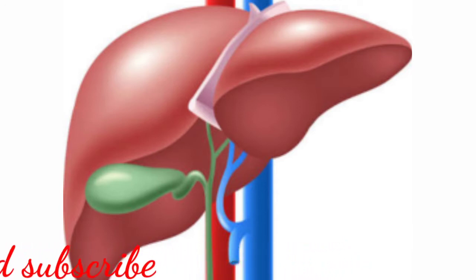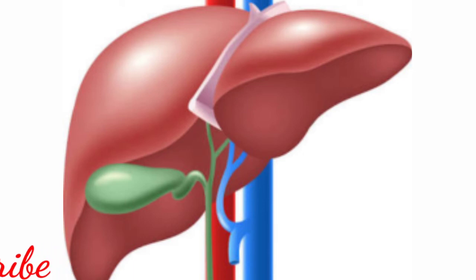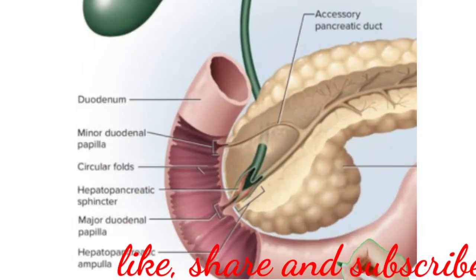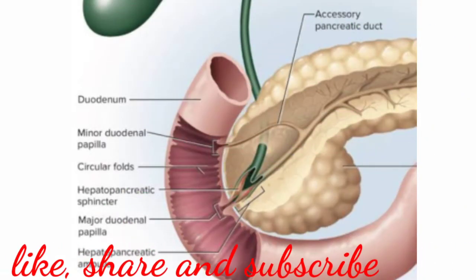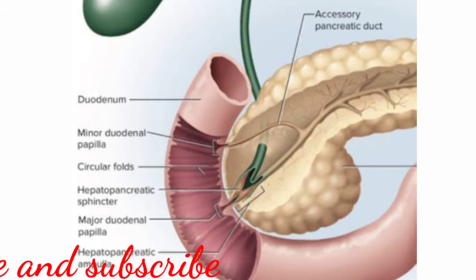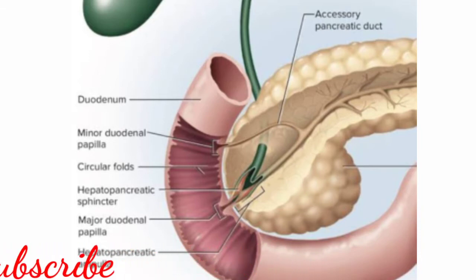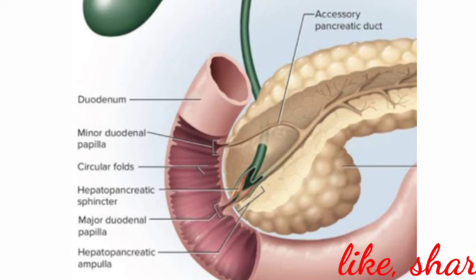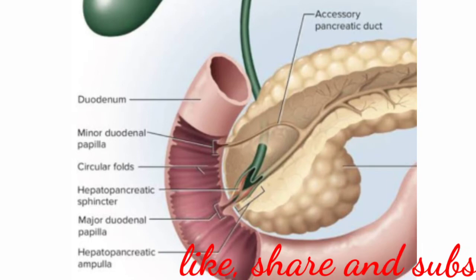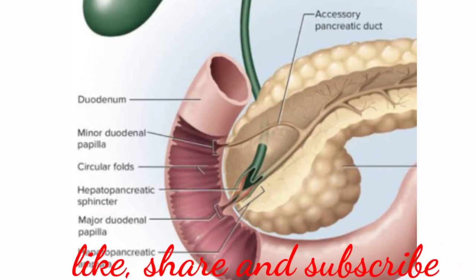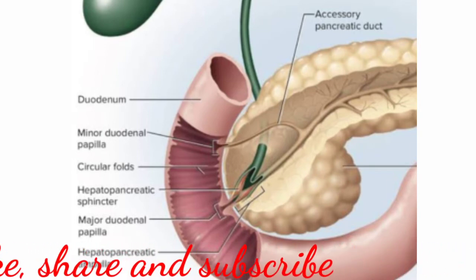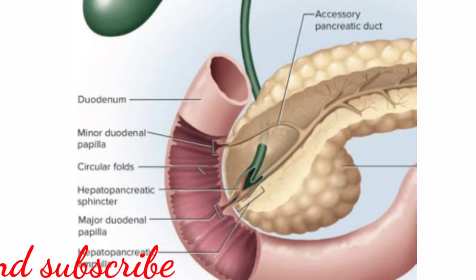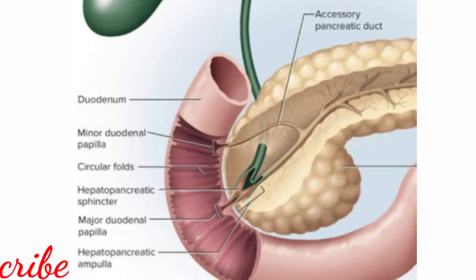The hepatic cells secrete bile juice, which is stored in a thin muscular sac called the gallbladder. The duct of the gallbladder along with the hepatic duct from the liver form the common bile duct. The bile duct passes downward and joins with the main pancreatic duct to form a common duct called the hepato-pancreatic duct. The opening of the hepato-pancreatic duct into the duodenum is guarded by a sphincter called the sphincter of Oddi.